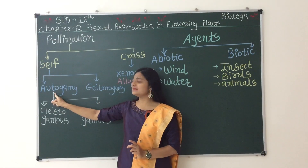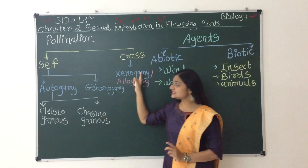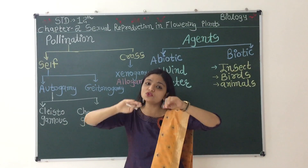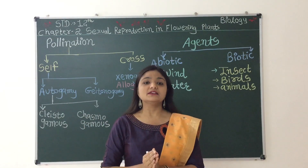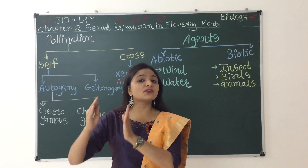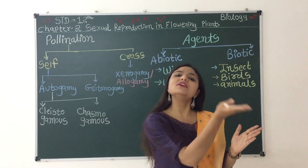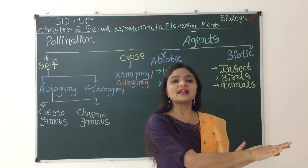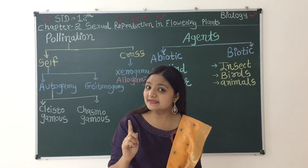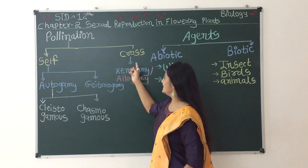Autogamy works in this way. In cross-pollination, both the plants and flowers are different. Transfer of pollen grains happens from the anther of one plant to the stigma of another plant. Though the plants are different, the species are the same. This is known as cross-pollination.